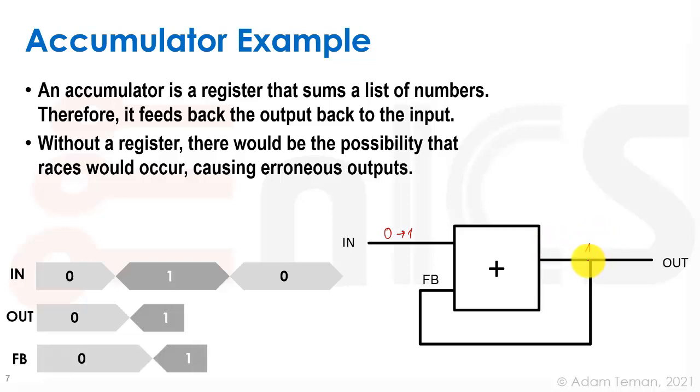However, the output goes through the feedback loop as we have over here and the one reaches this node over here, this input to the accumulator. Now at this point we have a one at both the two inputs of the accumulator.